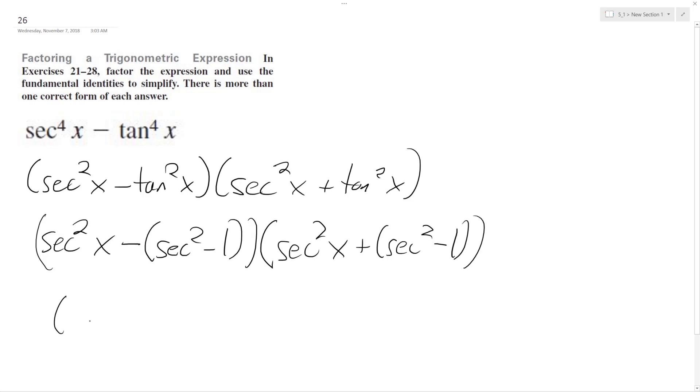On the left side, the secants cancel out, and we're left with minus negative 1, so it becomes positive 1 and just cancels out. On the right side, we get secant squared x plus secant squared x minus 1, and we're simply left with 2 secant squared x minus 1.